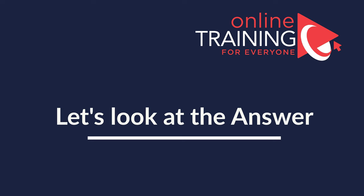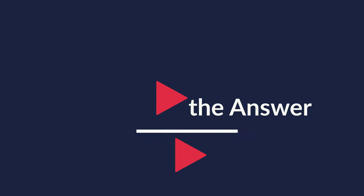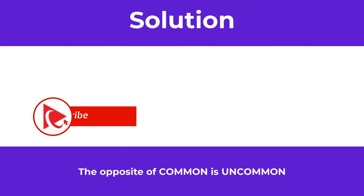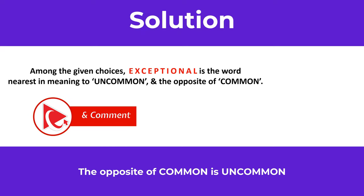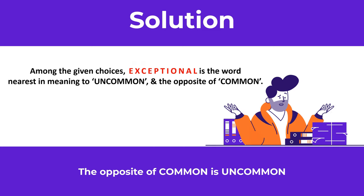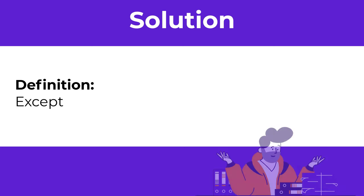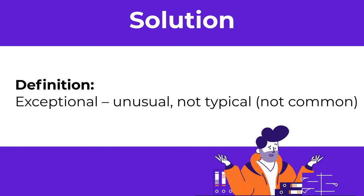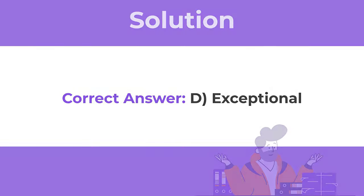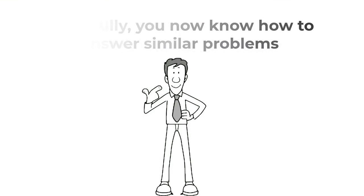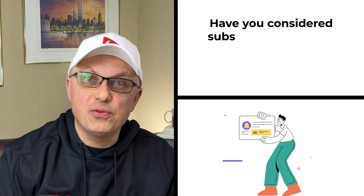You can come up with the correct answer by thinking logically. The opposite of 'common' is 'uncommon,' which means that among the given choices, 'exceptional' is closest to the meaning of 'uncommon' and is also the opposite of 'common.' The definition of exceptional is 'unusual and not typical,' which is not common. So the correct choice is choice D, exceptional.